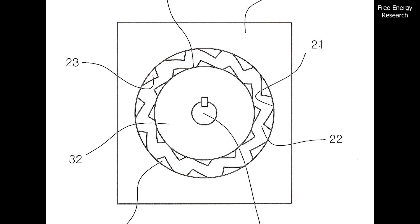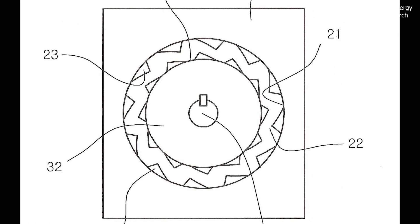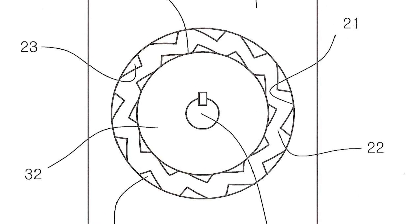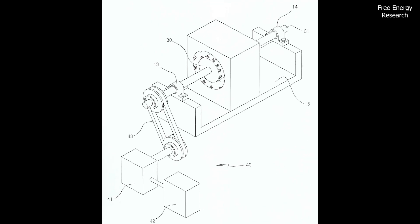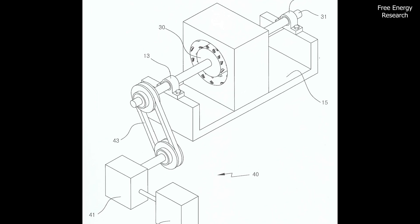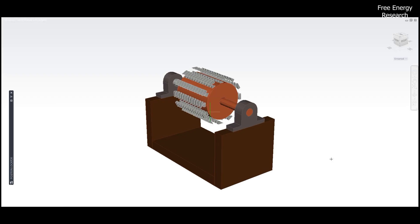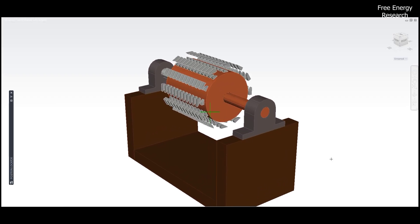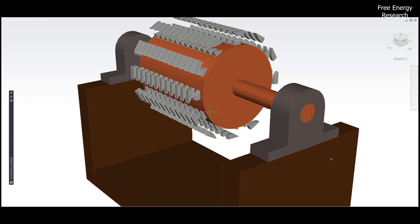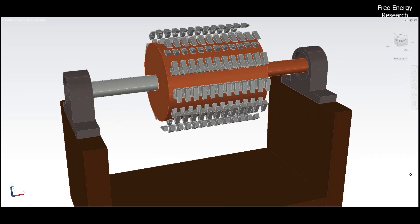As the rotor rotates, the magnetic bodies interact, generating a powerful repulsive force. This force is harnessed through a generator connected to the rotor's rotation shaft via a belt. The power transmitting unit efficiently channels this energy to the outside, making it readily available for various applications.